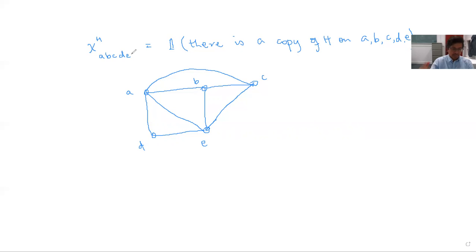So χ_H on an ordered tuple (a,b,c,d,e) is the indicator that edges relevant to H — specifically edges a-b, b-c, c-e, e-d, a-d, and a-e — are all present. More edges could also be present; we don't care whether they are present or not.